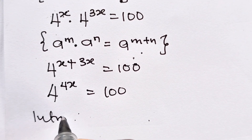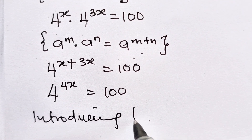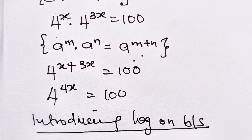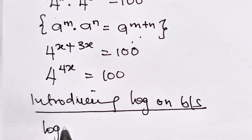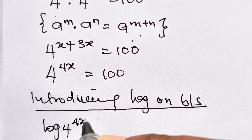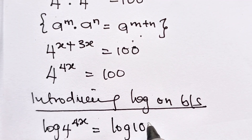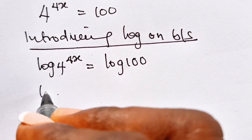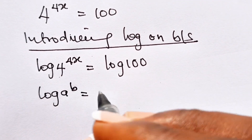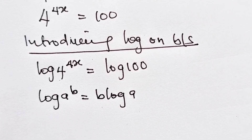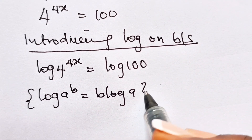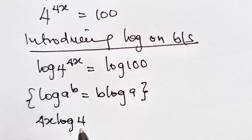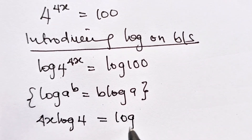Now, introducing log on both sides, we have that log of 4 to the power of 4x is equal to log 100. Remember that log of a raised to the power of b is equal to b multiplied by log a.